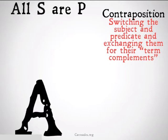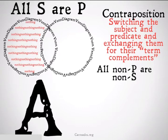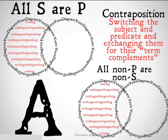For the A statement, all S are P. We fill in our Venn diagram as normal, shading in the area of S that is not P. The contraposition of this statement would be all non-P are non-S. We end up with the exact same Venn diagram, because what this diagram is saying is things that are not P — things that are outside of P — are also not S. So if it's outside of P, it can't be in the area of S, so we shade that same area. Because the diagrams look identical, this is a valid argument.